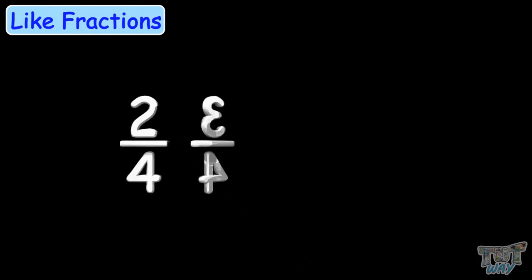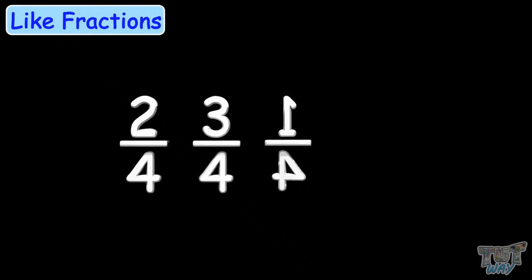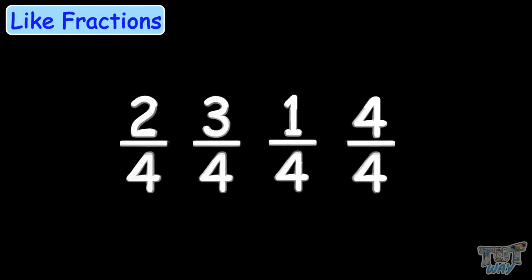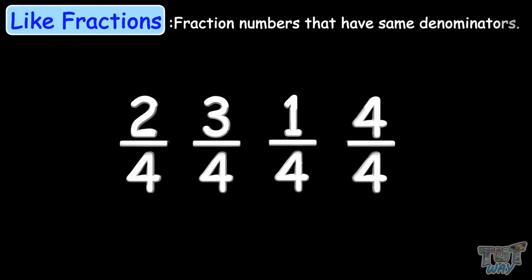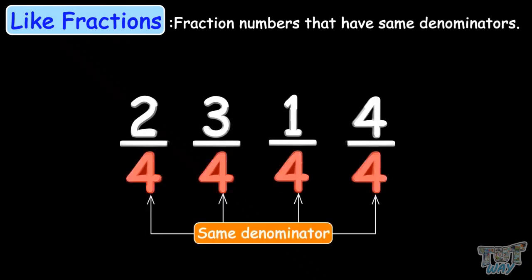2 by 4, 3 by 4, 1 by 4, 4 by 4 — all the fraction numbers that have same denominators are known as like fractions. And now we are going to learn how to compare these like fractions.